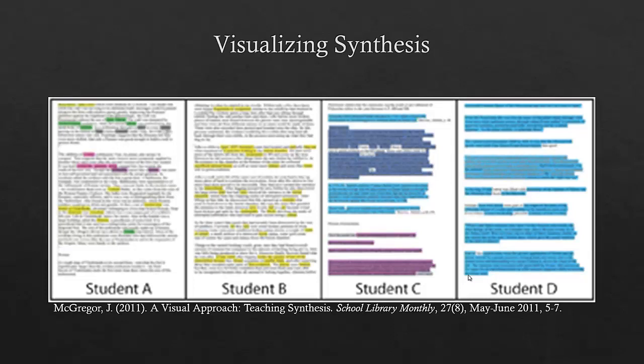This example is going to show you different levels of synthesis from bad to good. Starting with student D — the highlighted portions represent material used from other information sources. Student D is an example of borrowing heavily from someone else's work and only changing a few words here and there to add their own voice. This example is not synthesis because it is only using one source and not using their own voice. Really, this is plagiarism because they are not adding anything to what someone else has already said.